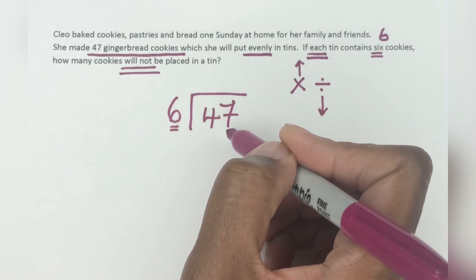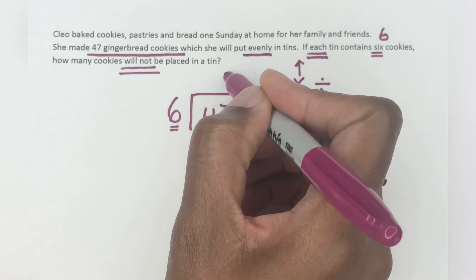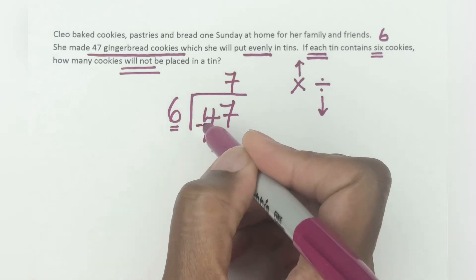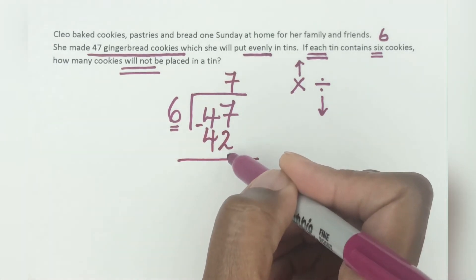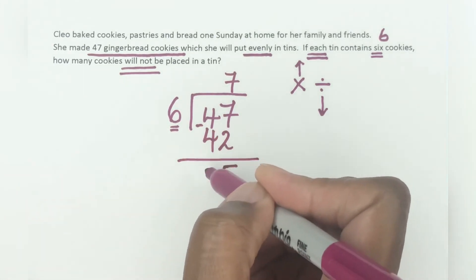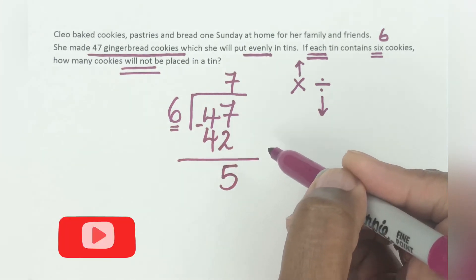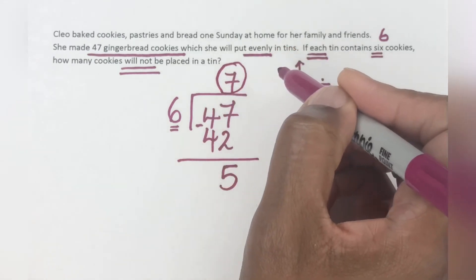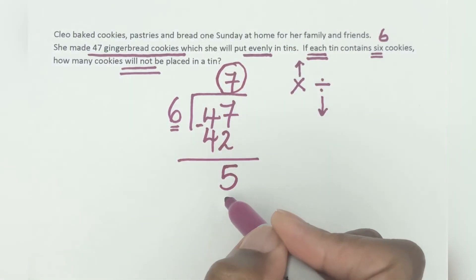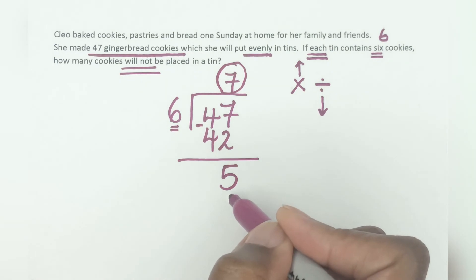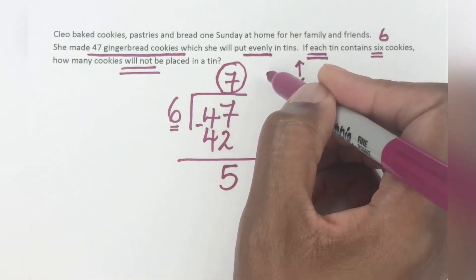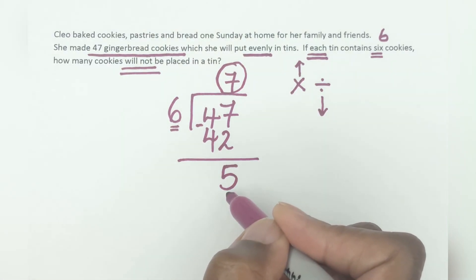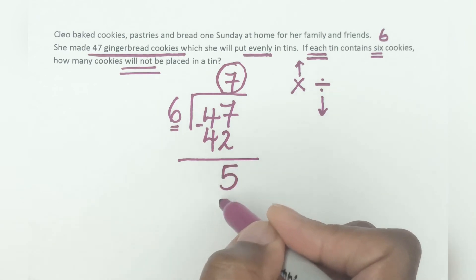Six times eight would be 48, so the closest is six times seven which is 42. Using the long division strategy: 47 minus 42 gives us five. So we have seven tins, and this five is what's left over — usually written as 'seven remainder five.' So this five is what's not going to be placed in a tin: there are going to be five cookies left over.